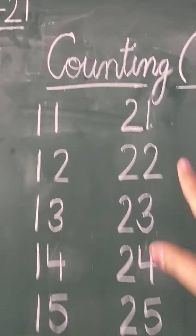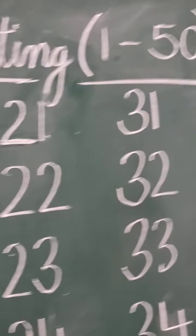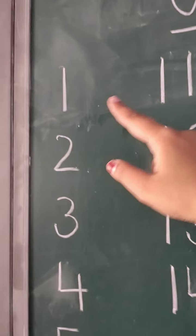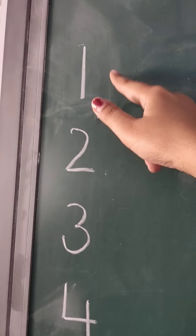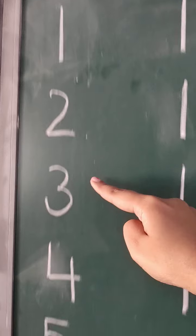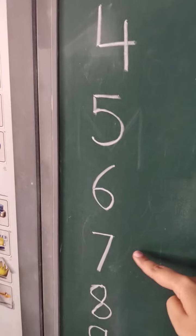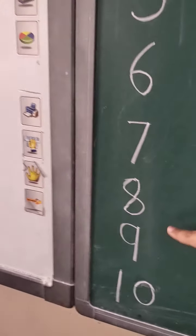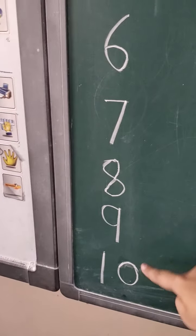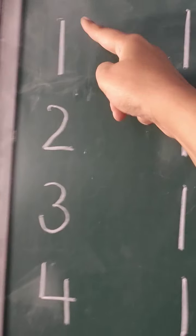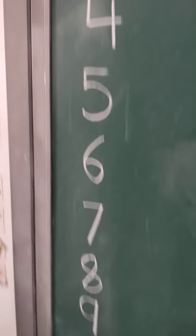Then write the heading: Counting, counting is from 1 to 50. Start writing: counting 1, 2, 3, 4, 5, 6, 7, 8, 9, and 10. Students, keep in mind that 1 to 10 should come in one column.